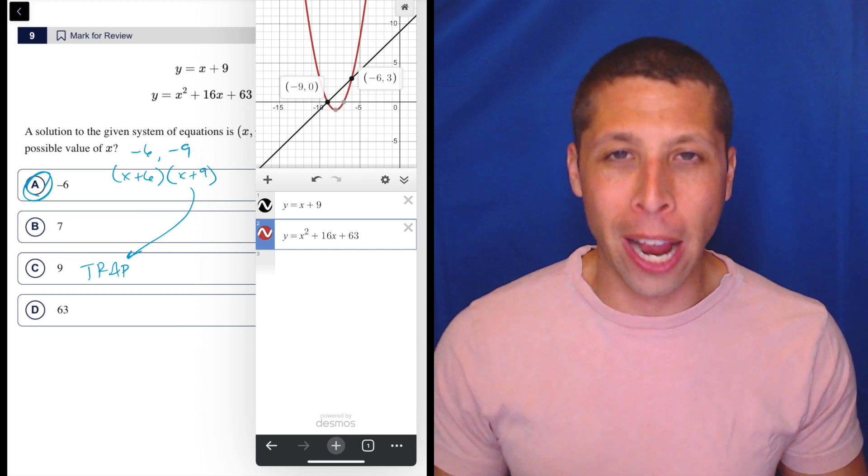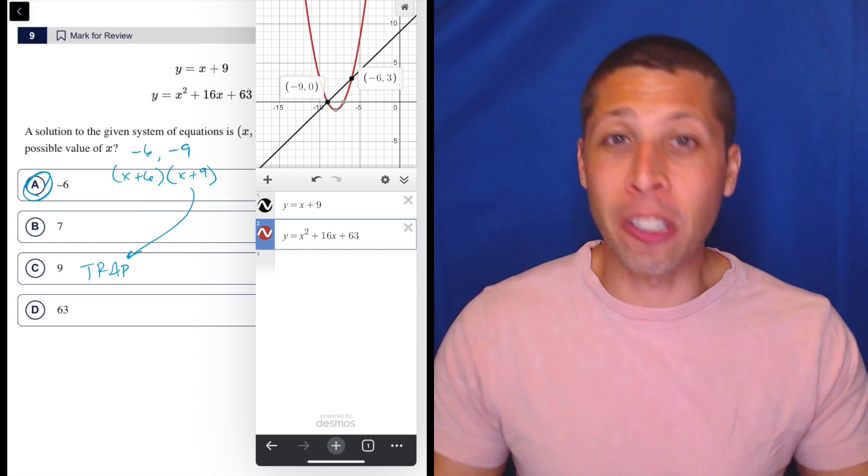because you will pick choice C confidently. Like, I solved this equation. I did all the algebra. I'm smart. But nope, the SAT is smarter. They're going to get you.